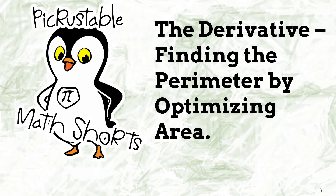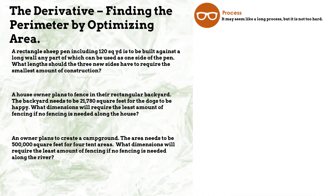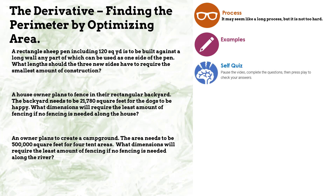Welcome to Pie Crustable Math Shorts. In this video we're going to be finding the perimeter by optimizing an area using the derivative. It's not magic, it's math. First we'll start with the process, then an example you can use as a practice problem, a self-quiz to check if you know what you're doing, and finally a video task.